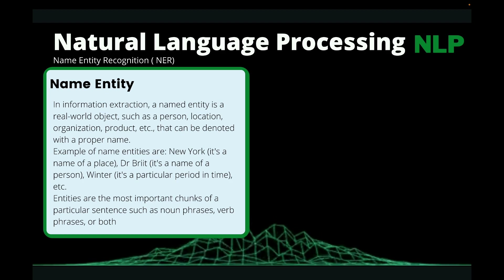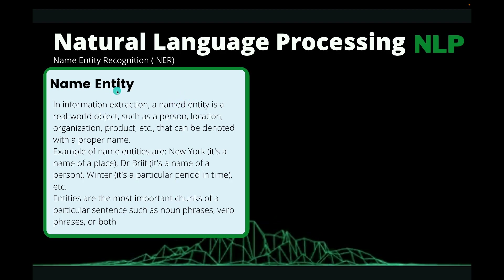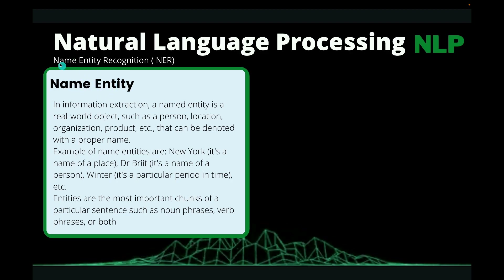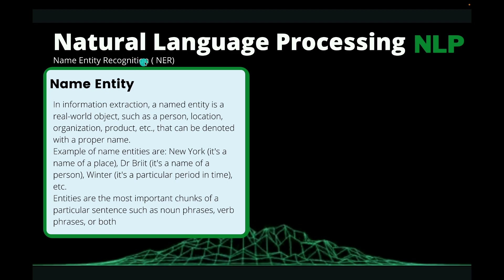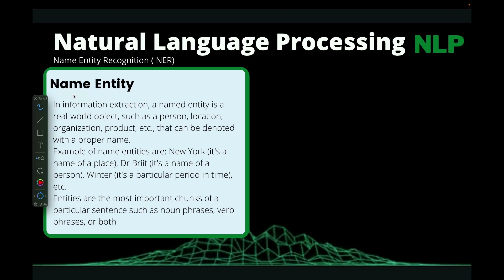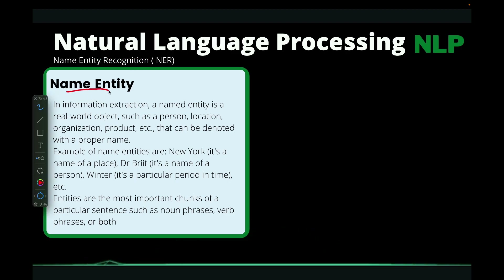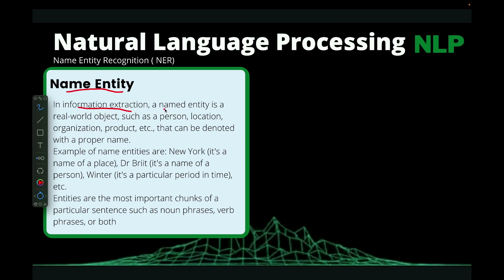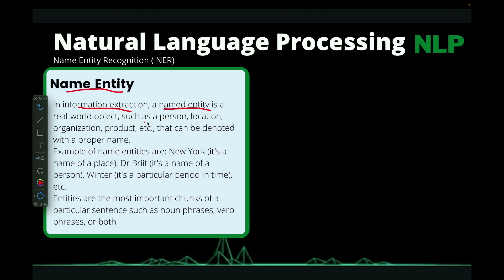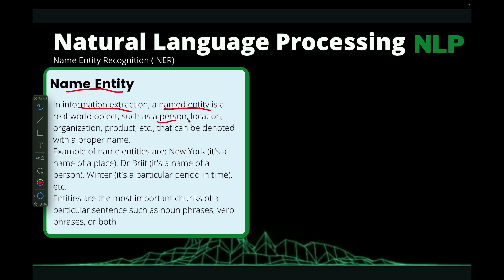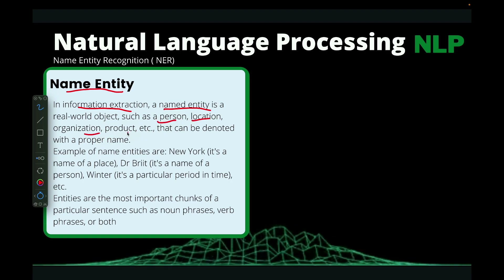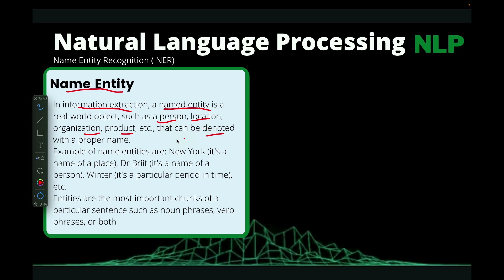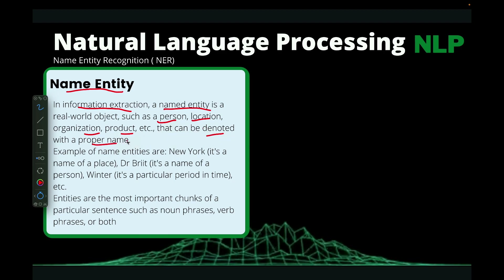Let's first understand what a named entity is before we understand what named entity recognition is. In information extraction, when we're talking about named entities, we are talking about things like person, location, organization, product — things that can denote a proper name.